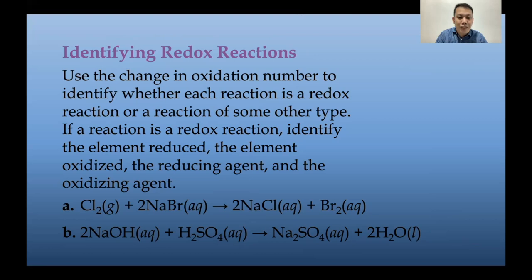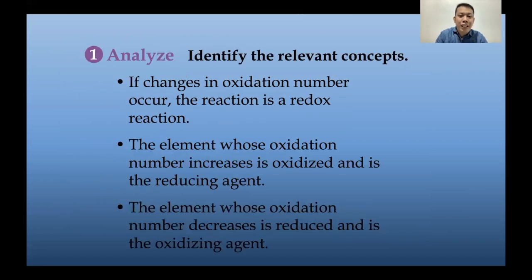We have two examples. Letter A is Cl2 + 2NaBr forming 2NaCl + Br2 — chlorine added to sodium bromide forms sodium chloride and bromine. Letter B is 2NaOH + H2SO4 forming Na2SO4 + 2H2O — sodium hydroxide combined with sulfuric acid forms sodium sulfate and water. The first step is identifying the relevant concept: if there is a change in oxidation number, the reaction is a redox reaction.